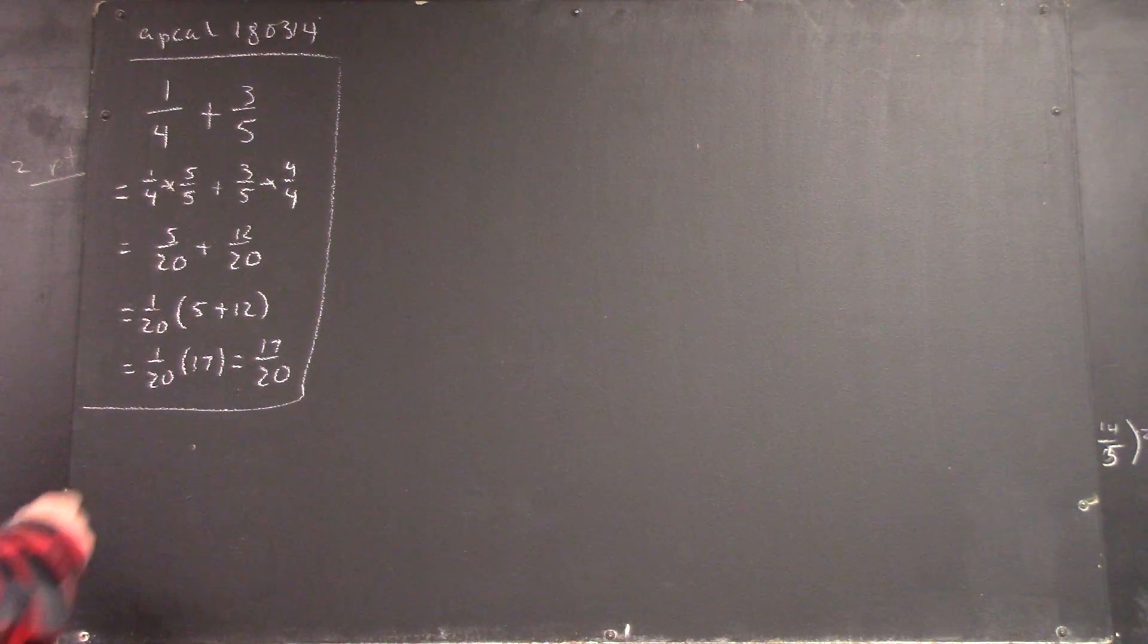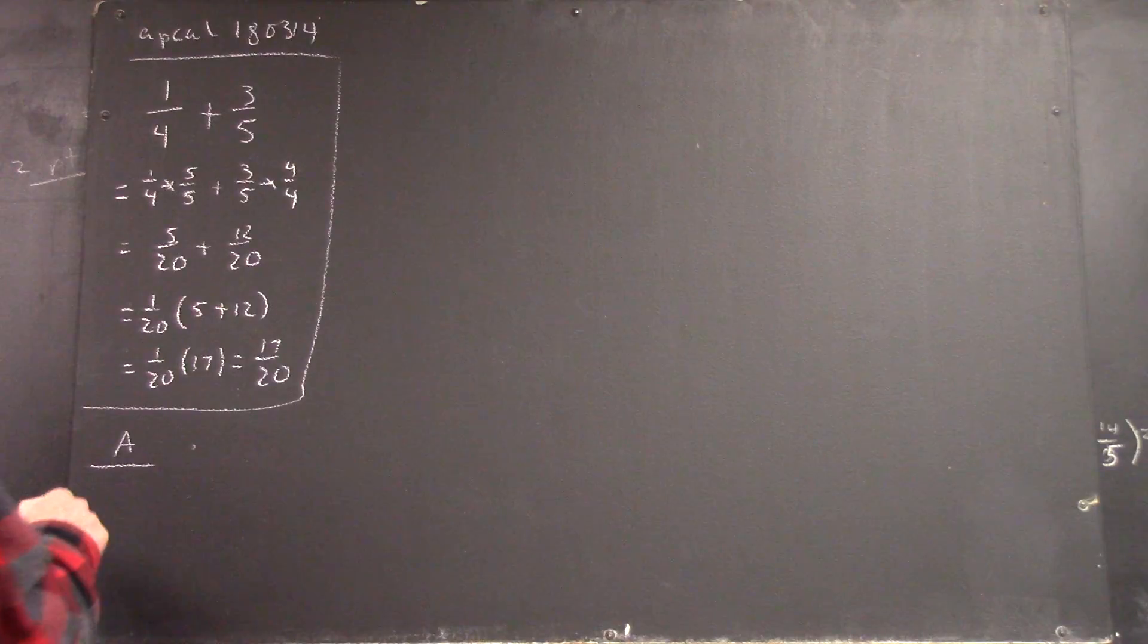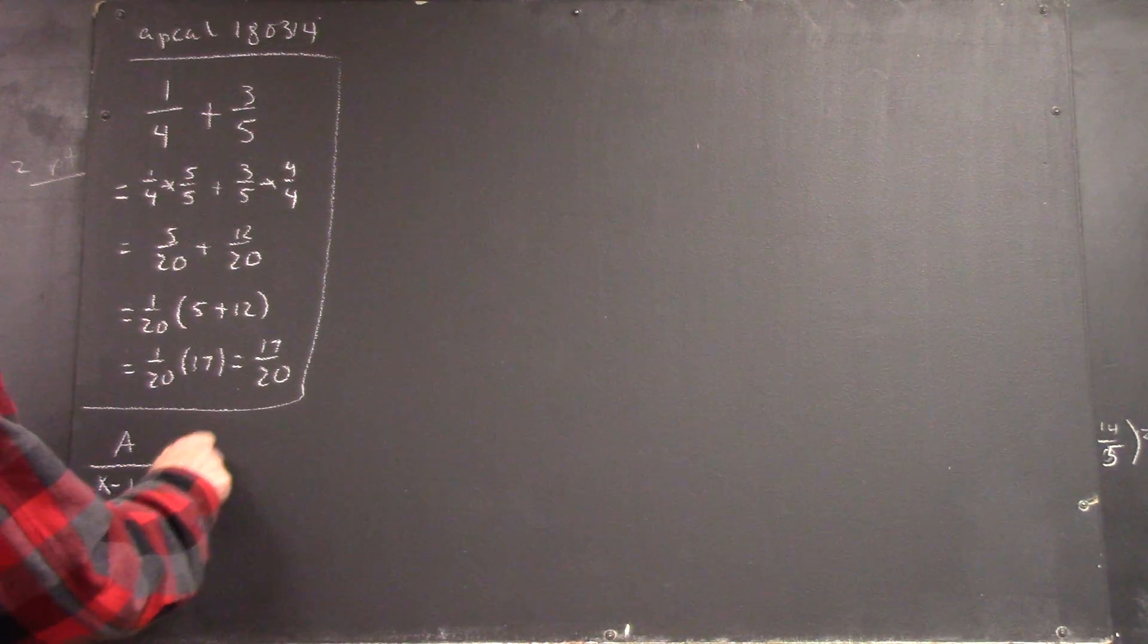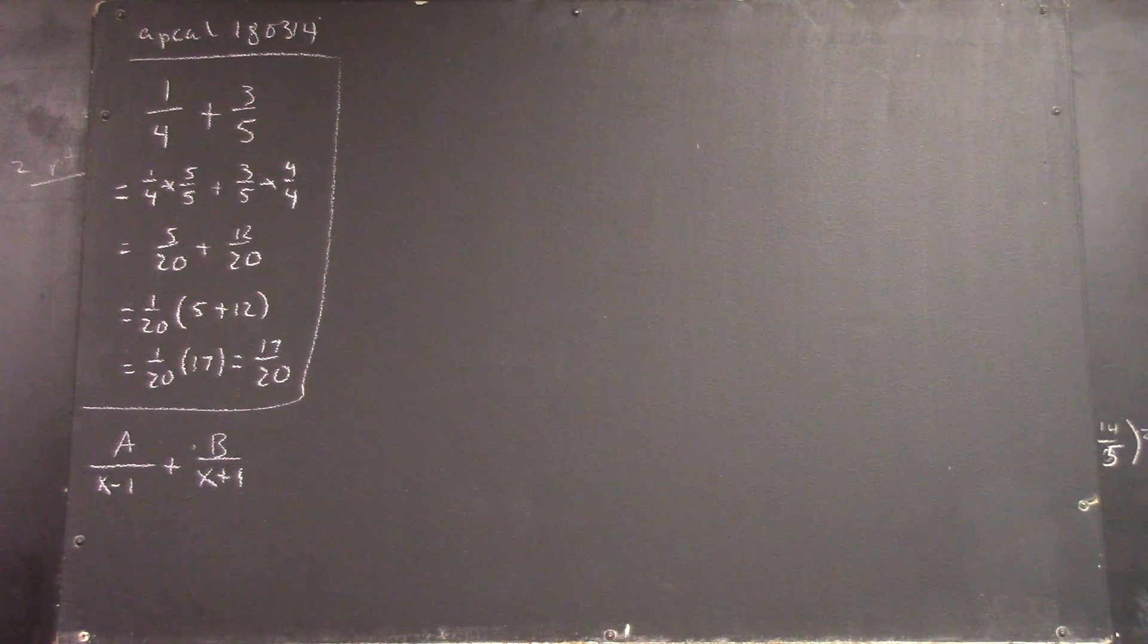So now you want to add a over x minus one to b over x plus one, right? What's your common denominator?